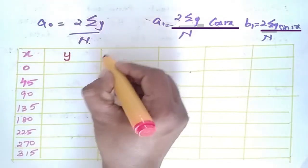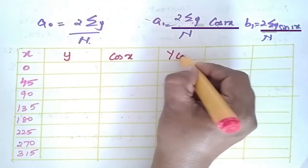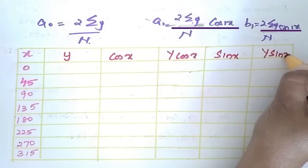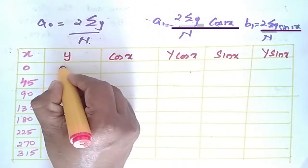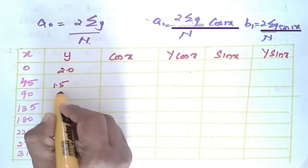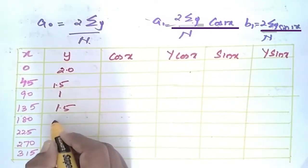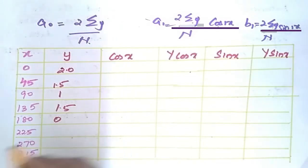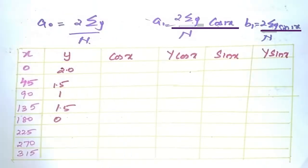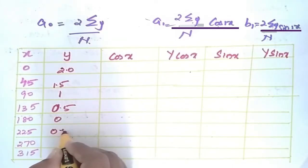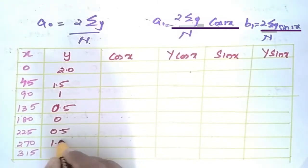Setting up the table with columns: cos(x), y·cos(x), sin(x), and y·sin(x). The y values are: 2.0, 1.5, 1, 1.5, 0, 0.5, 1.5, 1.5, 1.5.